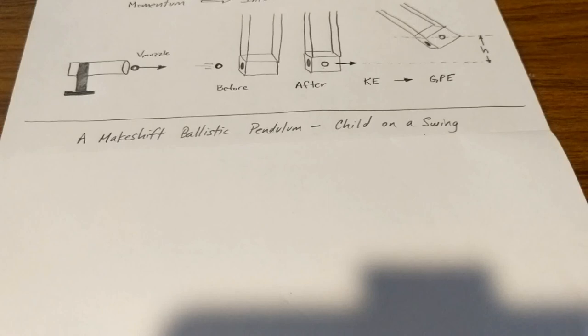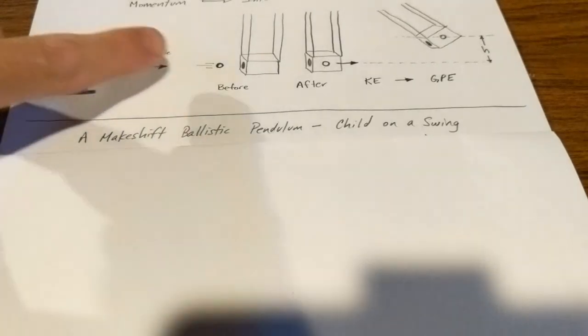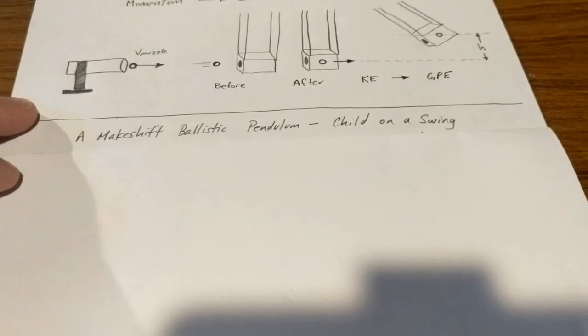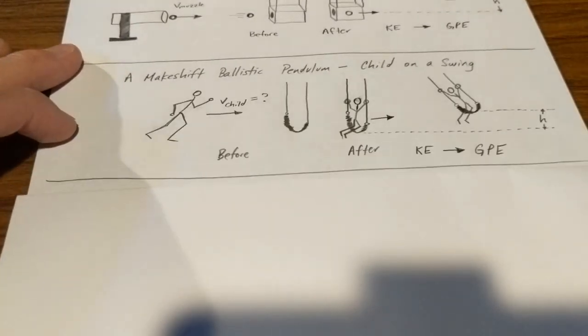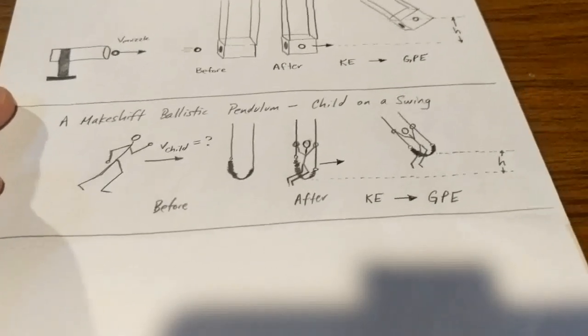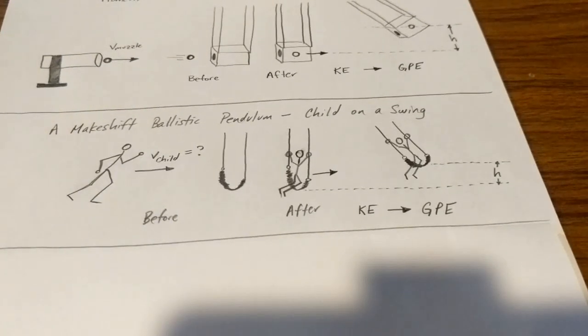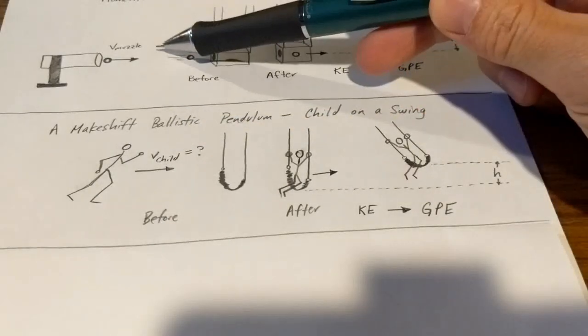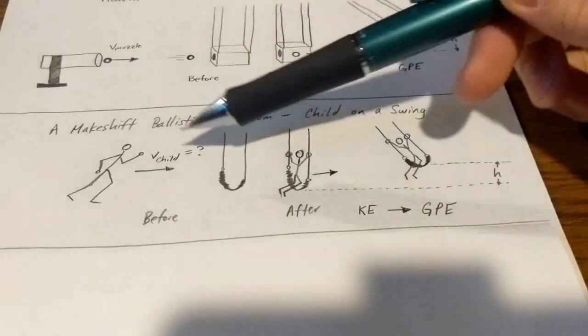Because I don't have access to our ballistic pendulum because it's at school, I had to improvise. So here's what I came up with. We have a swing set in my backyard and so I'm going to have this makeshift ballistic pendulum which is my son is going to run and be the cannonball here, and he's going to run and jump onto a swing that's then going to swing up into the air. So here is the diagram that's exactly like what's above, but now my child is the ball with some speed which we don't know. He's going to run and jump onto the swing.